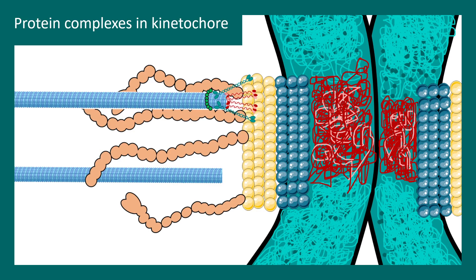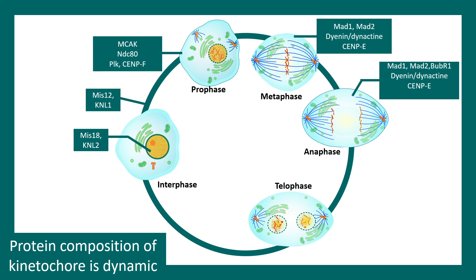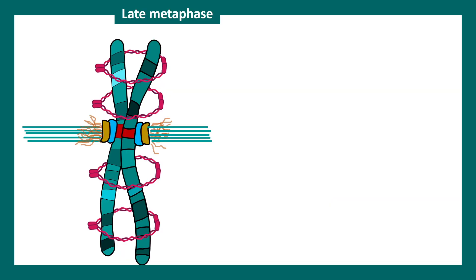Out of the many proteins, the key protein components of the kinetochore are the NDC80 complex, the CENPE, and the DAM1 ring complex. However, we should not picture the kinetochore as a static structure over cell division. In different phases of cell division, kinetochore protein composition changes. Across metaphase, telophase, and interphase, there are some common proteins present throughout, but specific proteins are present in specific phases of the cell cycle, and this has functional implications.